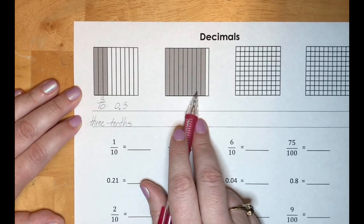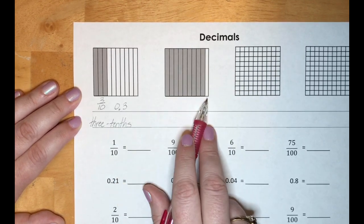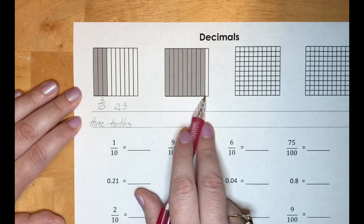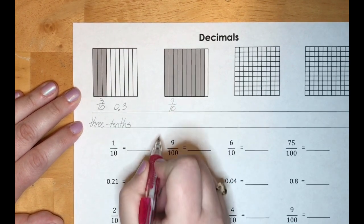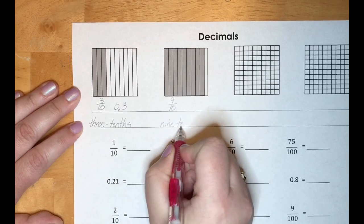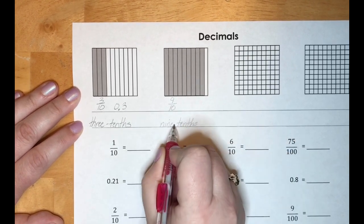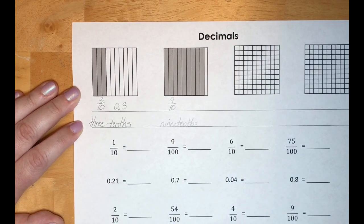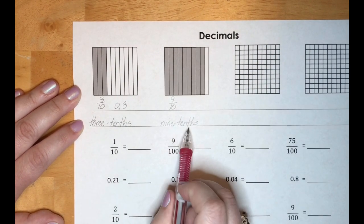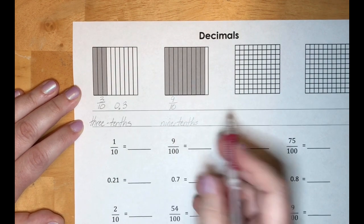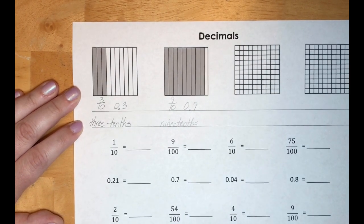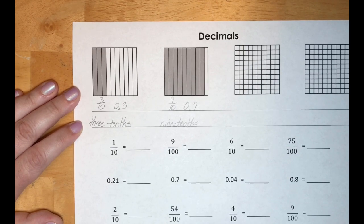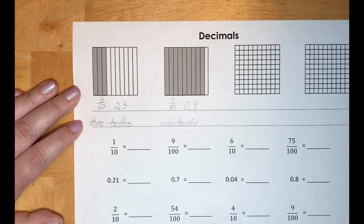In this picture we still have the square split into 10 pieces, but now 9 of the 10 are shaded. So in fraction form we have 9 over 10, or 9 tenths. To write that as a decimal, we only have one place behind the decimal because these are tenths, and that digit is 9. We put the zero in front to show no whole numbers, so it's just 0.9 — 9 tenths. The entire amount is less than one.